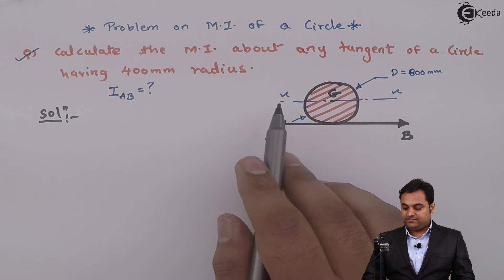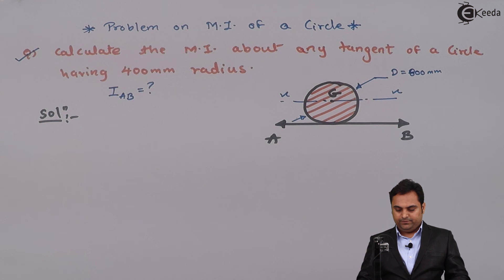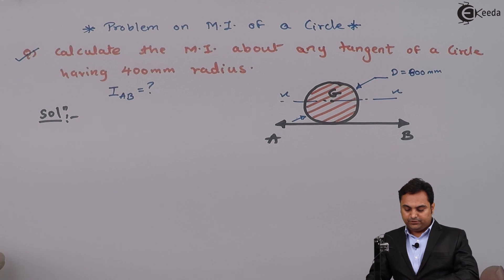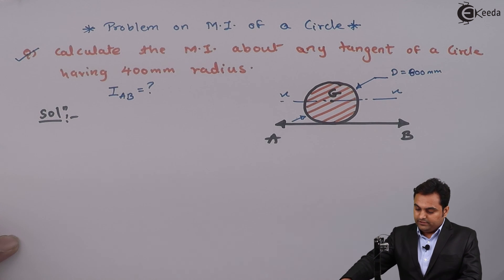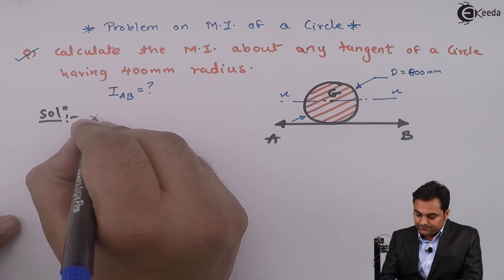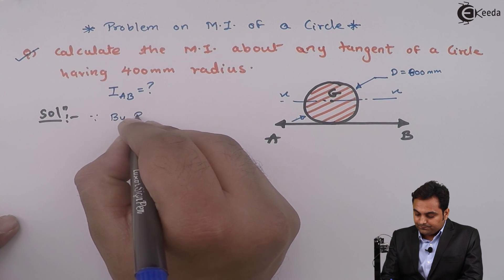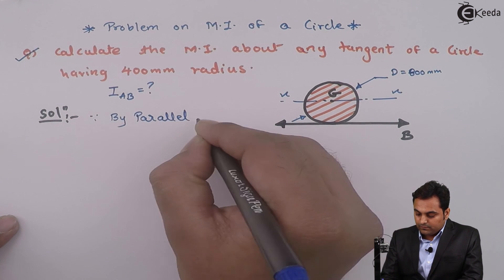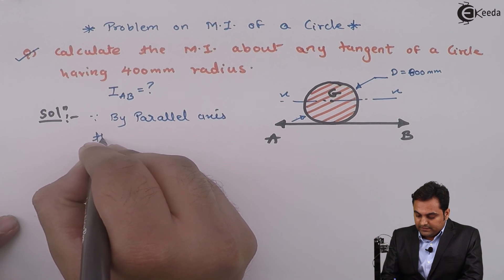Here x-axis is passing through centroid, so it becomes centroidal axis. So now here I'll say that since by parallel axis theorem...